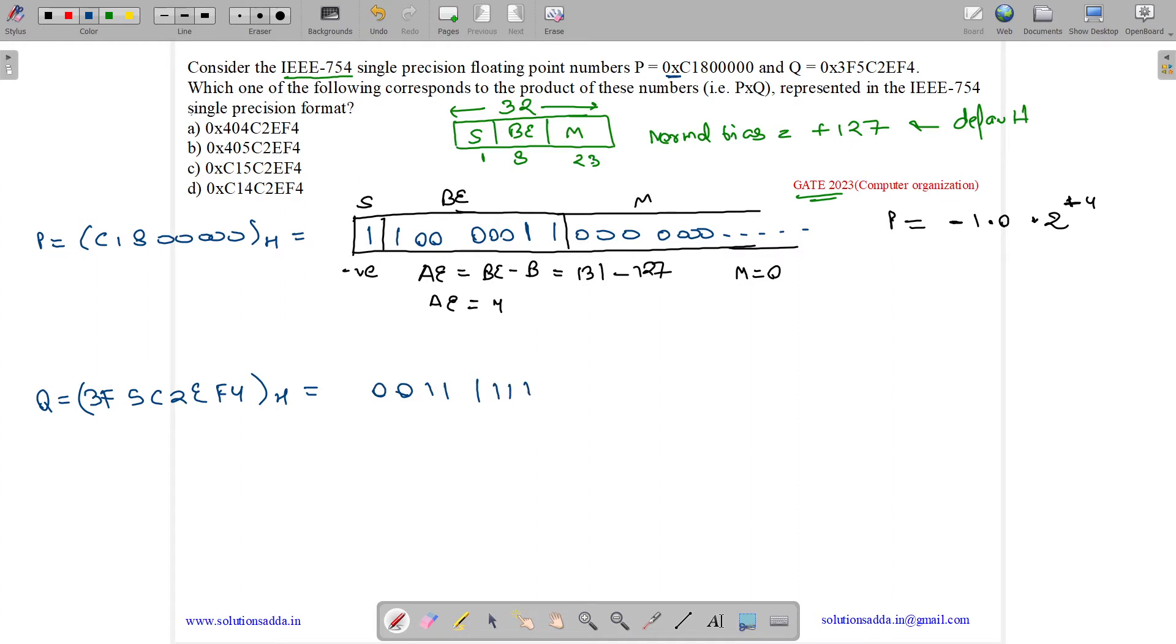In binary: 3 is 0011, F is 1111, 5 is 0101, C is 1100, 2 is 0010, E is 1110, F is 1111, 4 is 0100.